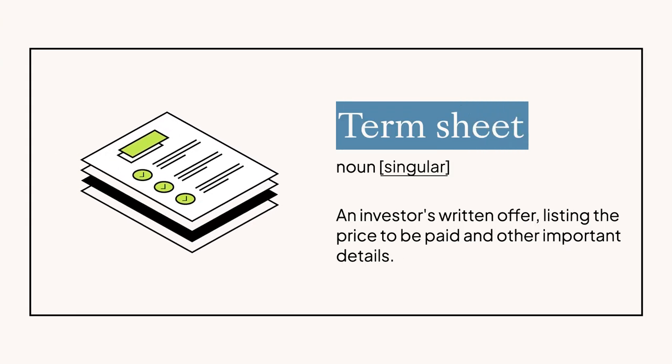When you raise money from investors, they'll normally work out a document with you called a term sheet, which spells out the terms of their financial stake in your company. That term sheet is where the exact details of these share preferences are spelled out. Our typical advice: work with your legal team to make sure you understand the specifics of everyone's share type before you sign anything.